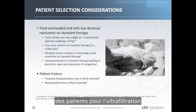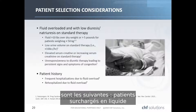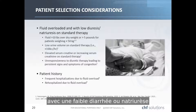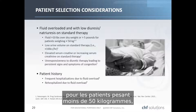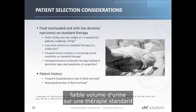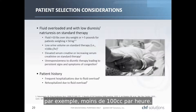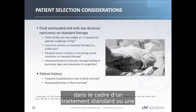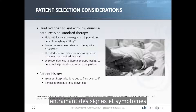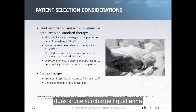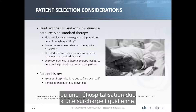Patient selection considerations for ultrafiltration include: fluid overloaded patients with low diuresis or natriuresis on standard therapy—fluid greater than 10 pounds over dry weight, or greater than 5 pounds for patients weighing less than 50 kilograms—low urine volume on standard therapy such as less than 100 cc's per hour, elevated or increasing serum creatinine on standard therapy, or unresponsiveness to diuretic therapy leading to persistent signs and symptoms of congestion. Patient history may include frequent hospitalizations due to fluid overload.